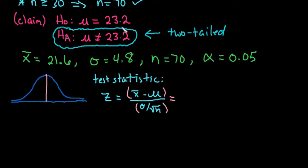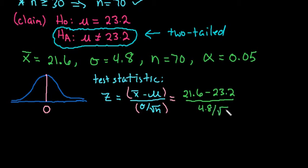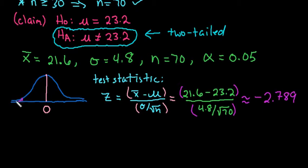We plug in our values: X-bar is 21.6, mu from the null hypothesis is 23.2, and we divide by 4.8 over the square root of 70. Always include the denominator in parentheses in your calculator. When you calculate this, you get approximately negative 2.789. That's almost three standard deviations out, so there's only a small area in the tail. This is our test statistic: negative 2.789.